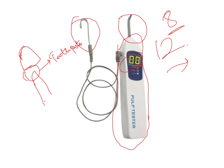There are conditions where pulp testers should not be used. First, if a non-vital tooth has a prosthesis or orthodontic wire on it, these act as electrical conductors and give false readings. Second, in multirooted teeth like first molars where some canals are necrotic and one is vital, false readings may occur. Immature teeth without complete apical formation also give false results.